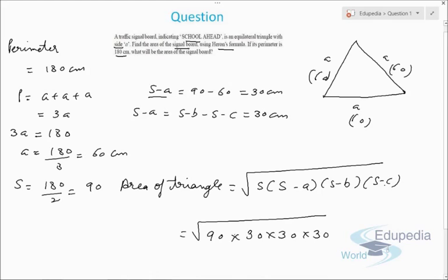We need to factorize: 90 × 30 × 30 × 30. We can write 90 as 3 × 3 × 10, and each 30 as 3 × 10. So altogether we have the factors 3 × 3 × 10 × 3 × 10 × 3 × 10 × 3 × 10 under the square root.